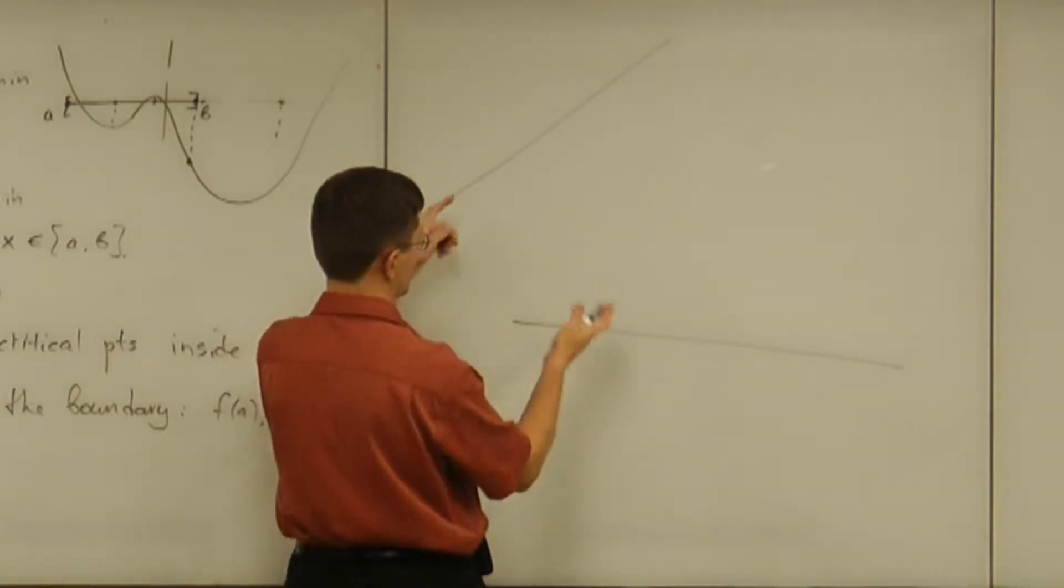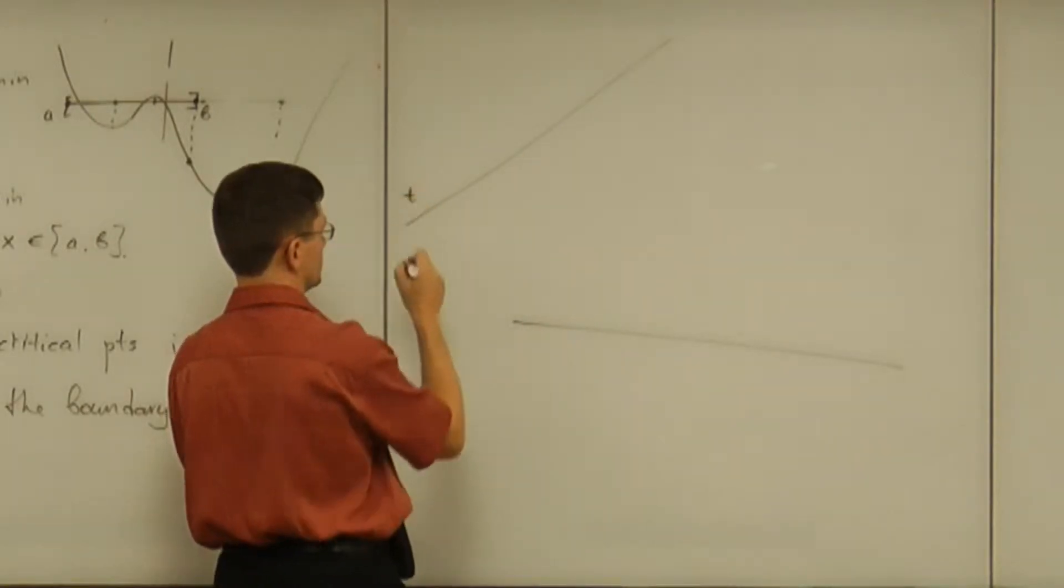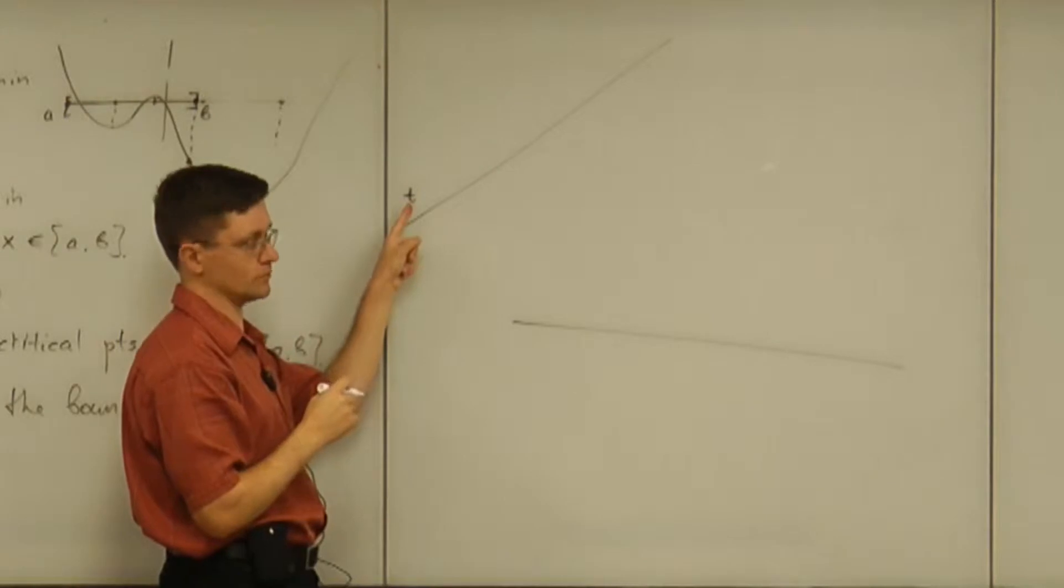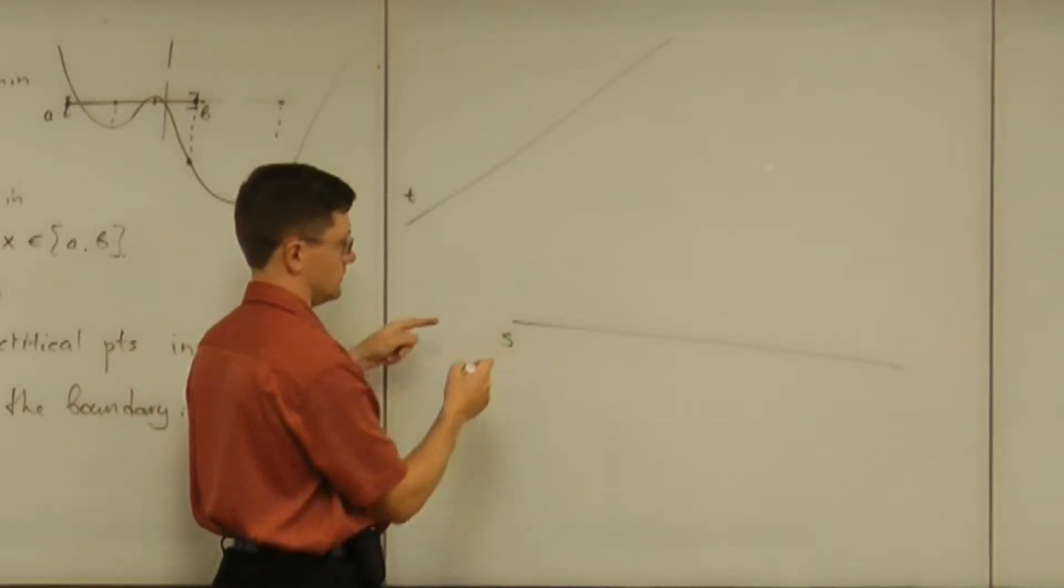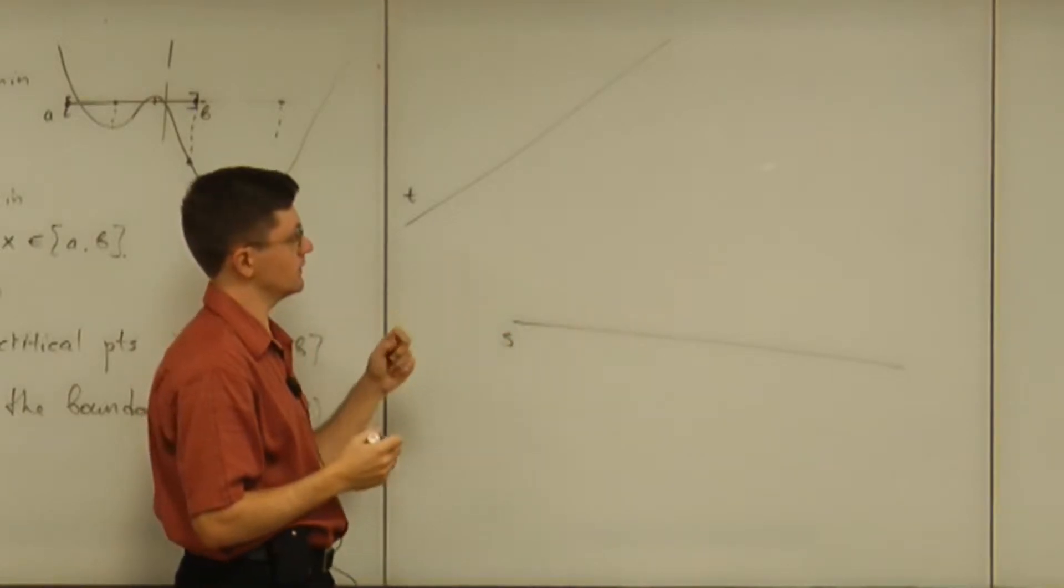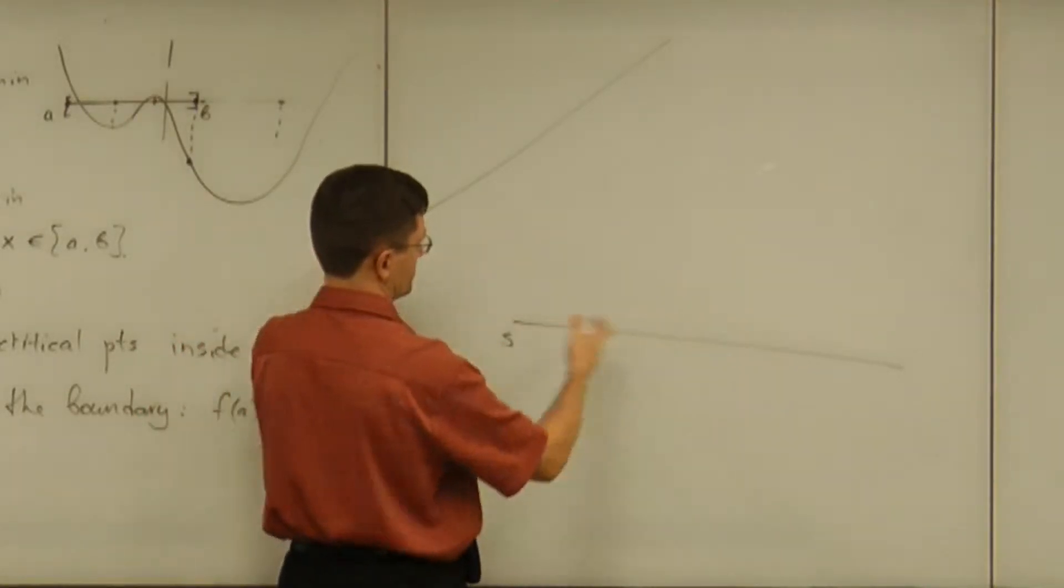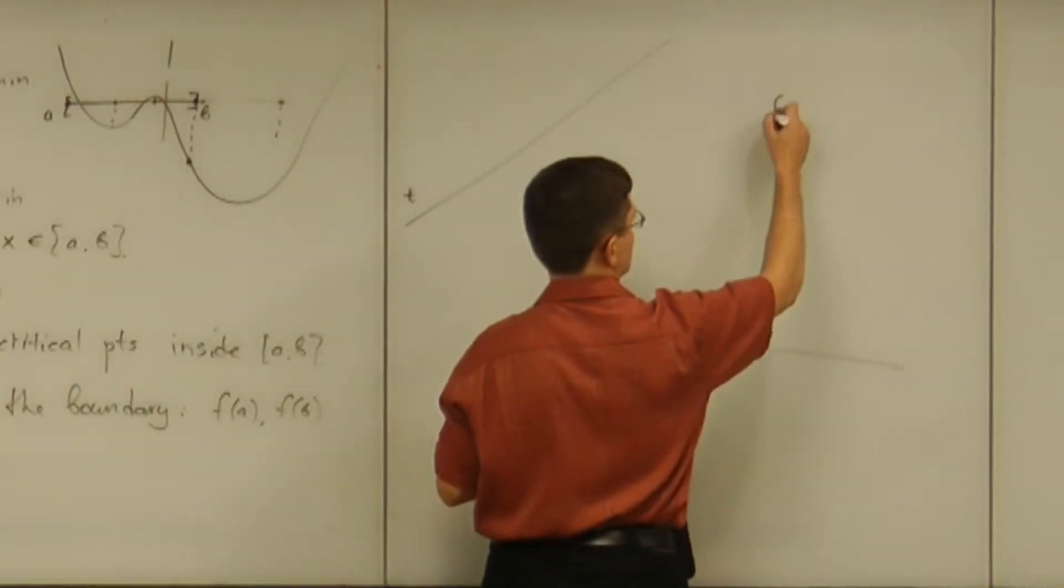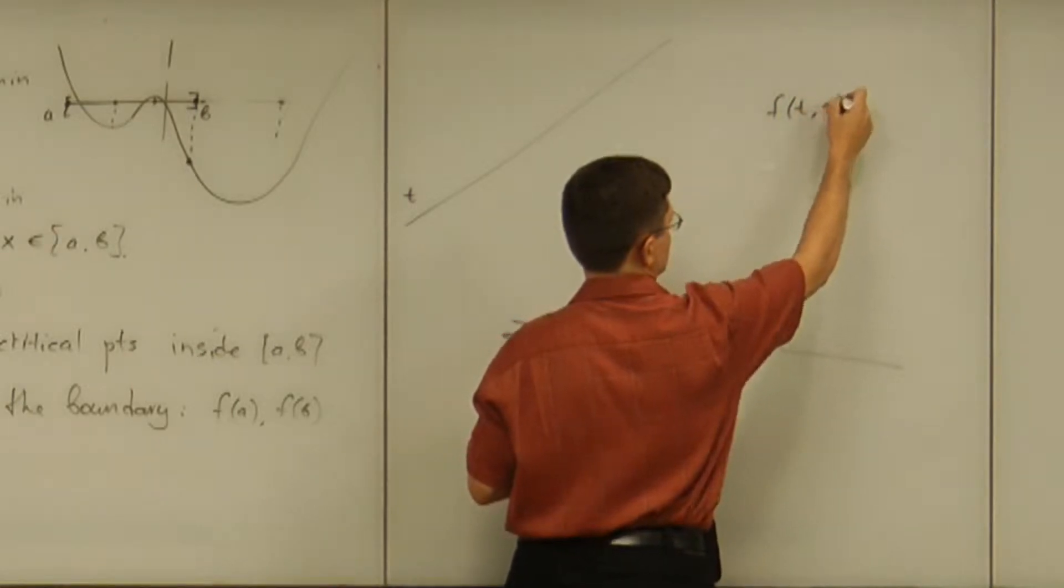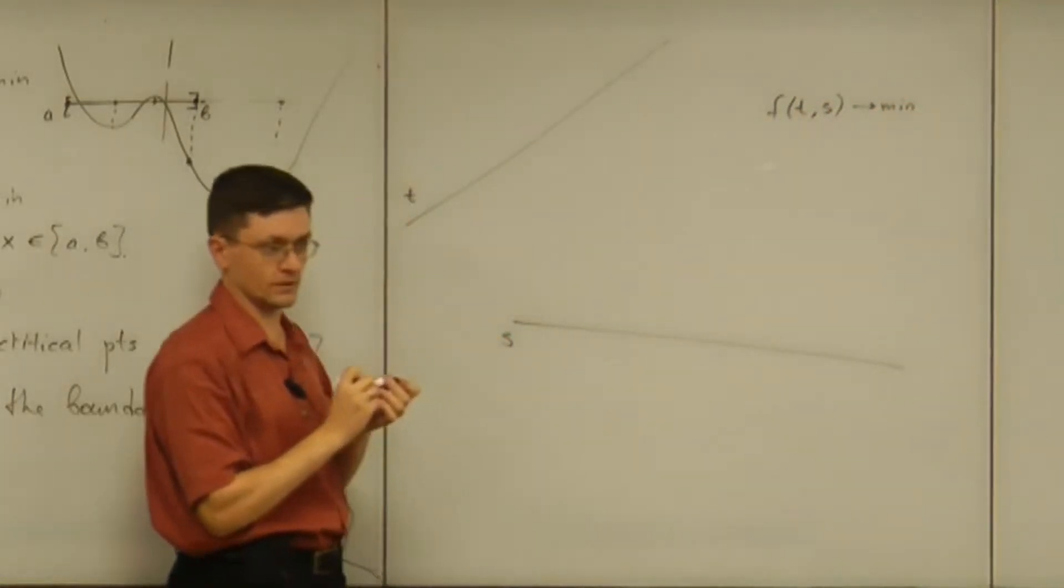For the distance between skew lines, we know how to find it. What we do basically is we associate one variable with parameter on one line, another variable as a parameter on the other line. And then we let those parameters run arbitrarily and minimize a certain function of t and s. That was the idea algebraically.